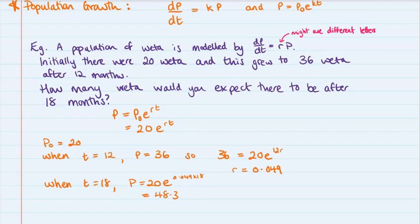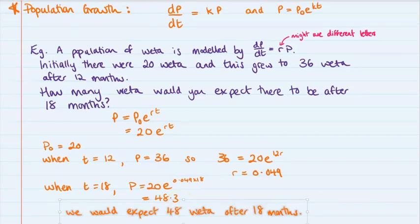So then we're asked to work out how many we expect there to be at 18 months. So we pop in when t is 18. So the population will be equal to 20 e to the rate that we just worked out times by 18 for our t. And if you pop that into your calculator, you get 48.3. So that means that we would expect there to be 48 weta after 18 months.